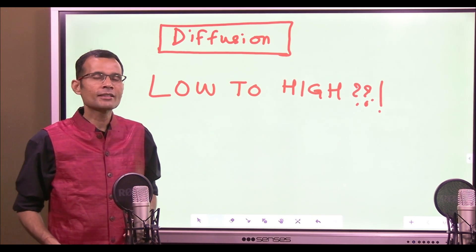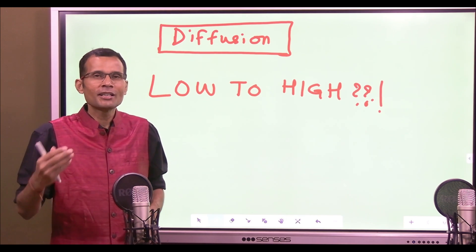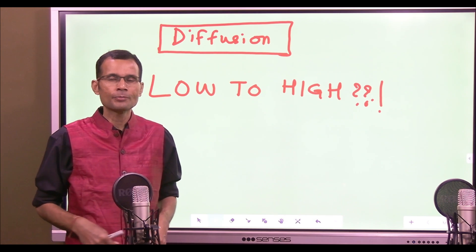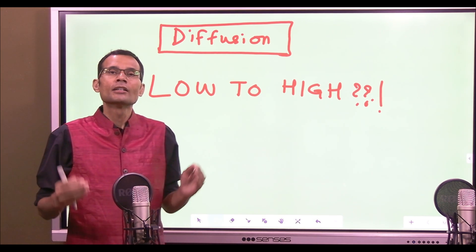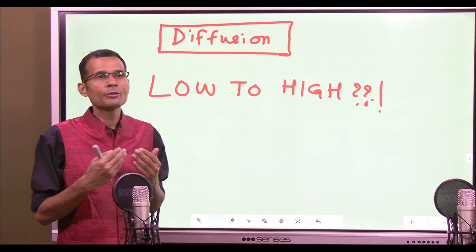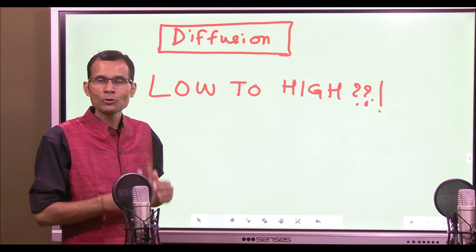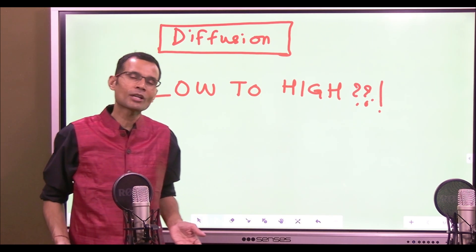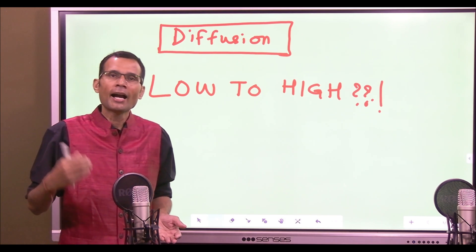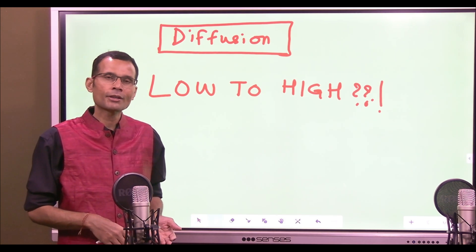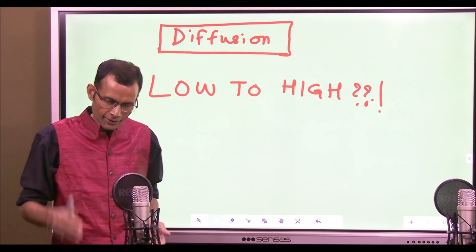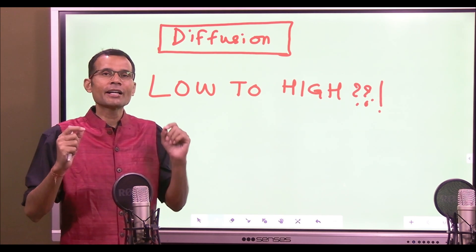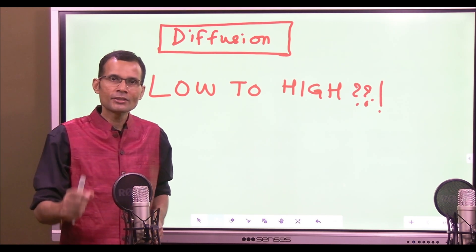Some students did not particularly like that statement where I said diffusion can go from low to high concentration. They started questioning: 'Sir, how can you say it can go from low to high concentration? We have always learned that diffusion is a passive transport, a downhill transport, and it always goes from high to low concentration.'